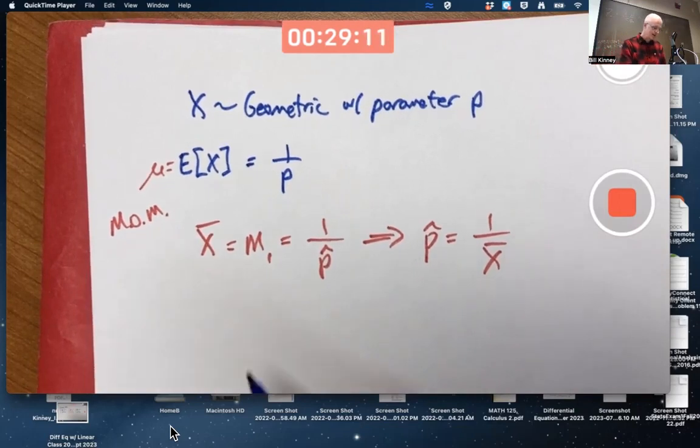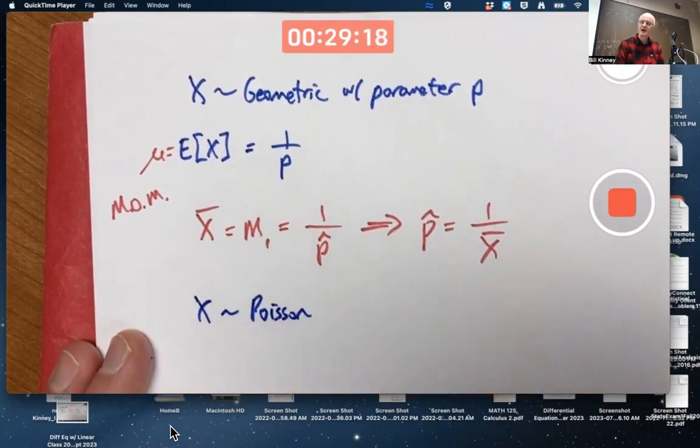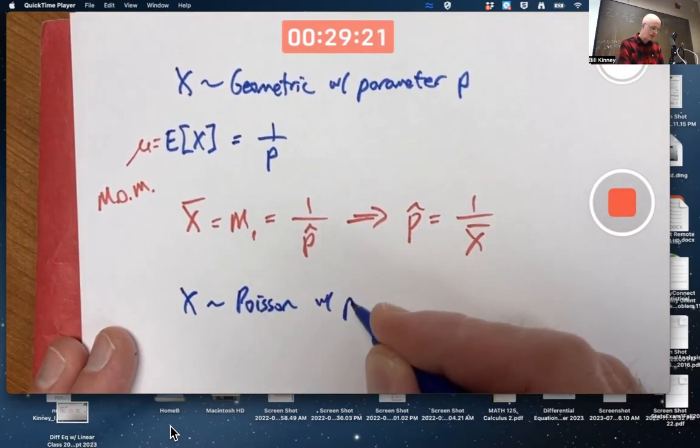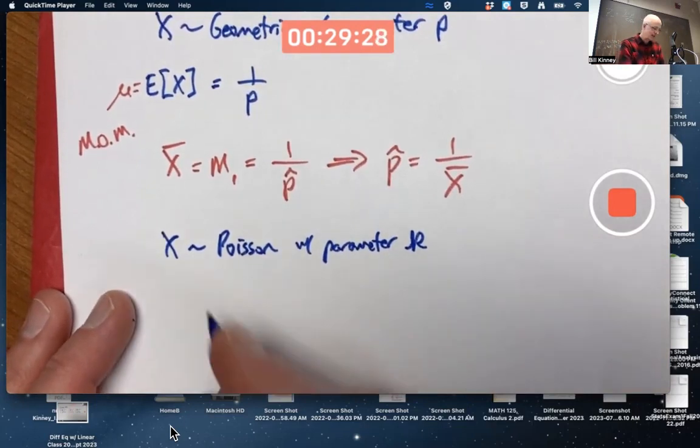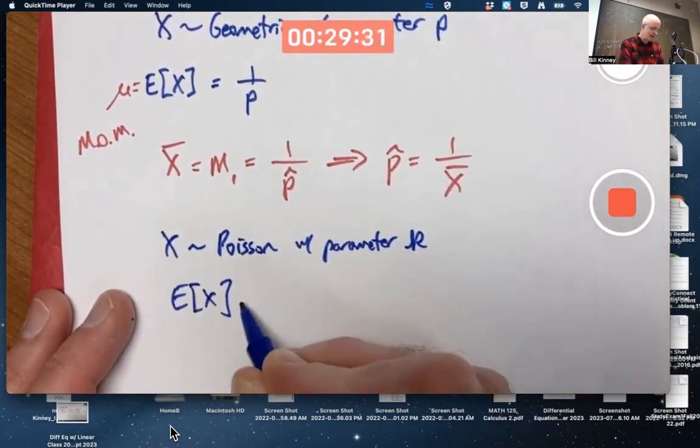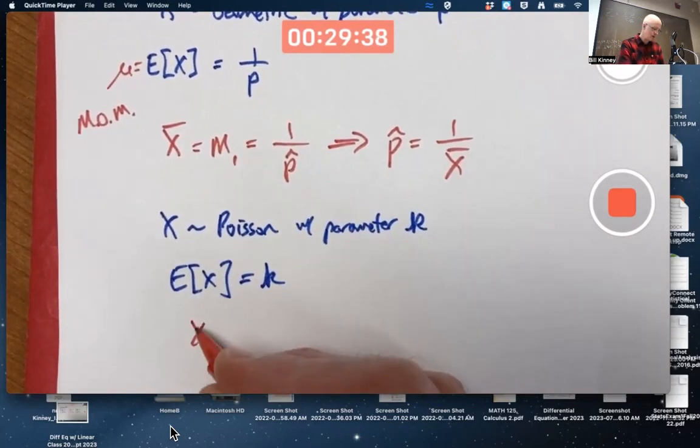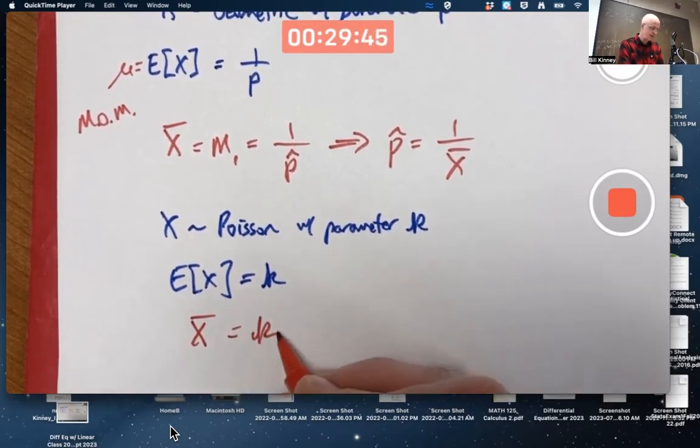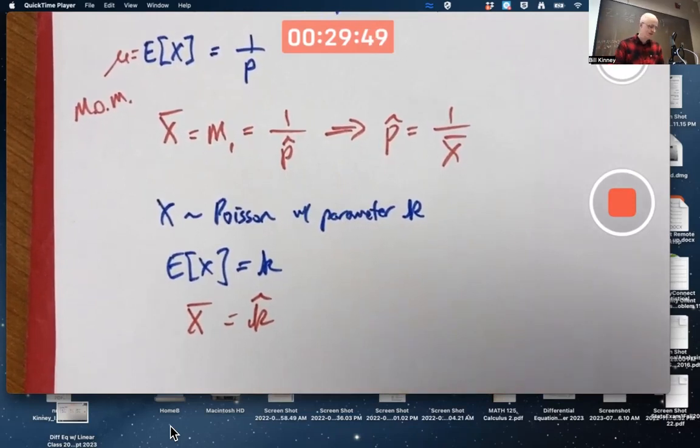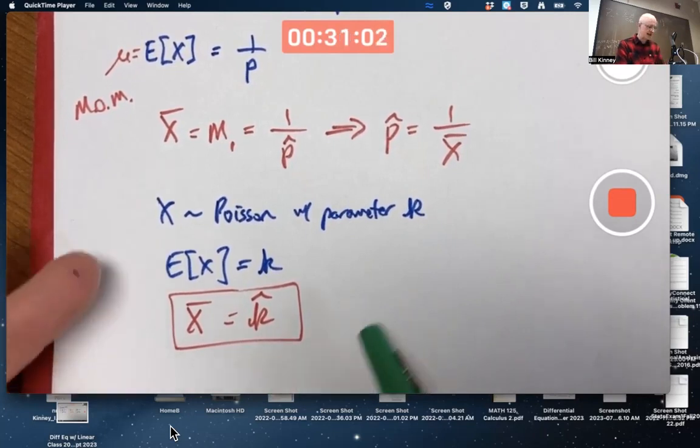Here's an even easier example. X is a Poisson distribution, Poisson random variable with parameter, well, the book initially calls it k. What's the expected value of X? The mean? It's k. So what do we do with the method of moments? Replace the expected value, the moment, with its natural estimator, x bar. Replace the parameter with a symbol representing its estimator. There's nothing to do. We're done. There we go. k hat equals x bar. We don't even have to do any algebra. So that's an even easier application of the method of moments.